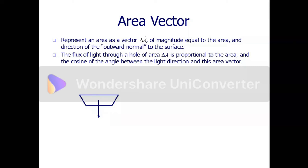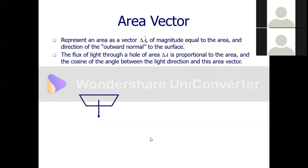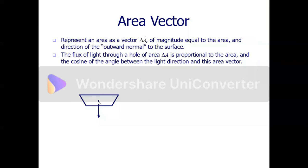As I change the orientation of the area, the area vector changes direction, always remaining normal to this surface. In summary, we have seen that the flux depends on the area available for the vector field to penetrate. The area vector has a magnitude equal to the magnitude of the area in question, and its direction is normal to the surface and outward. I hope this demonstration has helped. Any questions on the area vector?